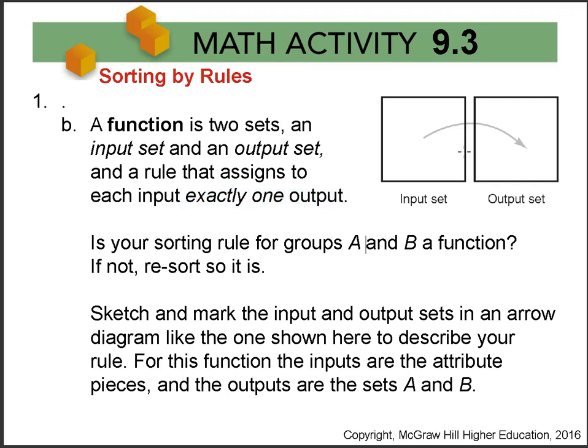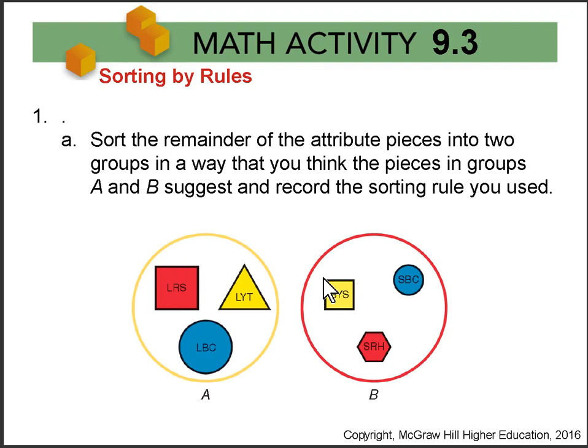So you see we have an arrow diagram here from an input set with a rule to an output set. So is the rule you define for groups A and B a function? If not, resort so it is. Looking here, if I pick up a single attribute piece, one that's not already here, it should either go in set A or in set B, group A or group B. It can't go into both of them or it won't be a function.